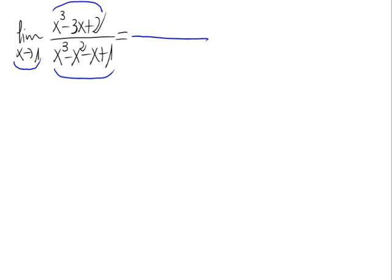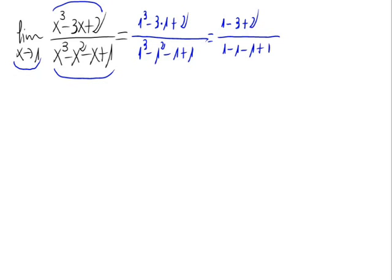So, substituting the one, this would be 1 cubed minus 3 times 1 plus 2, divided by 1 cubed minus 1 squared minus 1 plus 1. This is the same as 1 minus 3 plus 2, divided by 1 minus 1 minus 1 plus 1. So, 1 plus 2 is 3, minus 3 is 0 on the numerator, and on the denominator, 1 minus 1 is 0, minus 1 plus 1 is 0 again.